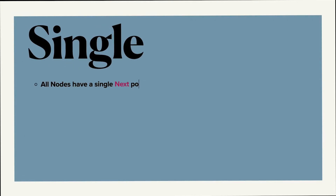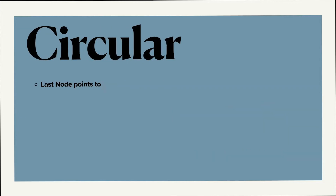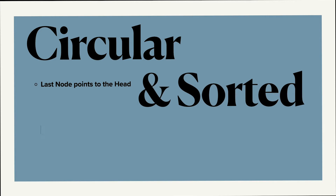Linked lists can be single or double linked. You can have nodes that only point to the next node, or nodes that point to both previous and next nodes, and that allows you to traverse in both directions. You can also have circular linked lists — these can be single or double — and the only difference is that the tail node, aka the last node, points to the head. Linked lists can also be sorted, which can be super convenient at times.